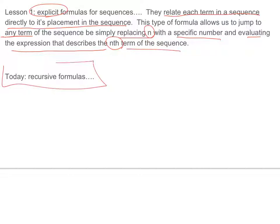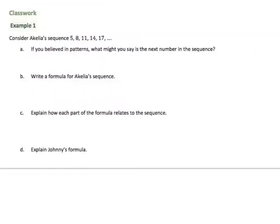Today we're jumping right into classwork. Consider Achilles' sequence: 5, 8, 11, 14, 17. If you believed in patterns, what might be the next number in the sequence? Well, it looks like we're adding 3 each time. So the next term would be 20, because it's plus 3 each time.